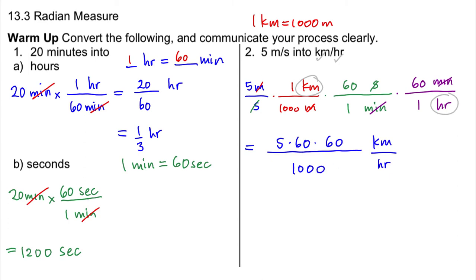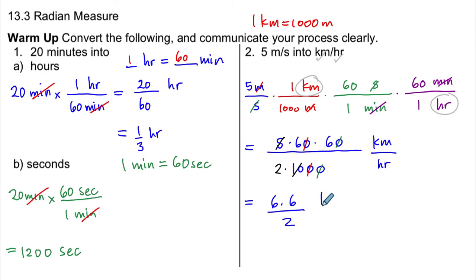Rather than multiply 5 times 60 times 60 straight across, we simplify by reducing common factors. I see 5 divided by 10 is the same as 1 divided by 2, giving me 6 times 6 divided by 2 kilometers per hour. Then 2 divides into one of the 6s three times, so we get 3 times 6, which is 18. So 5 meters per second equals 18 kilometers per hour.